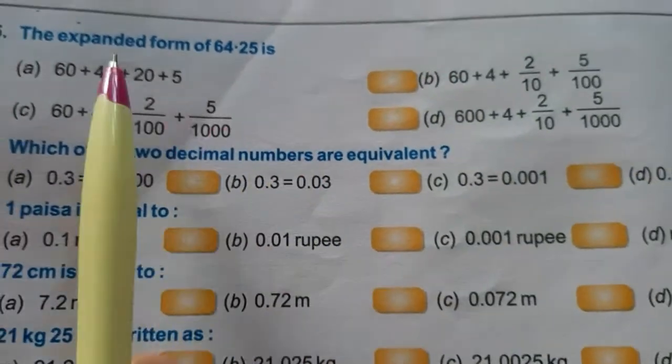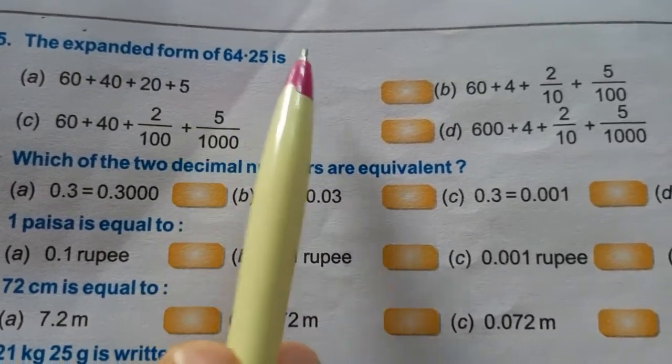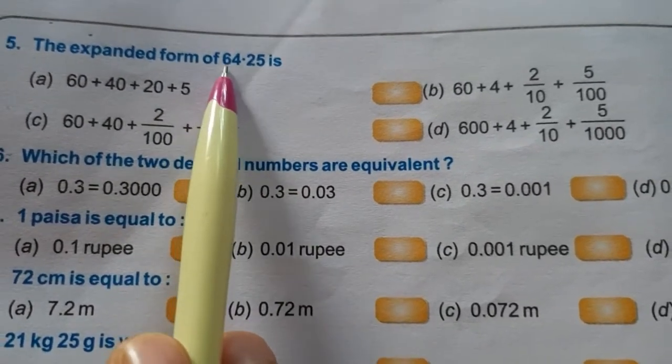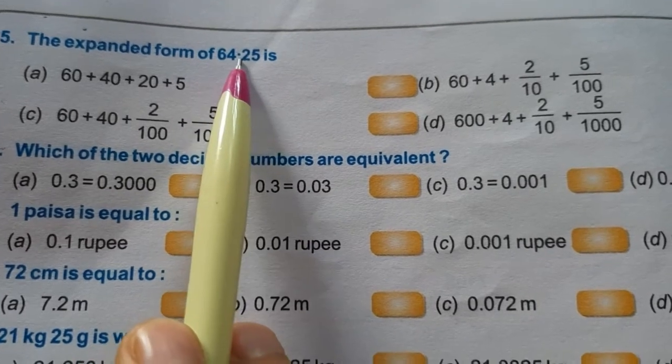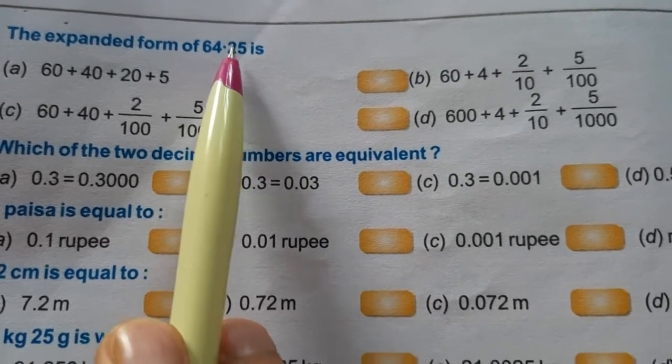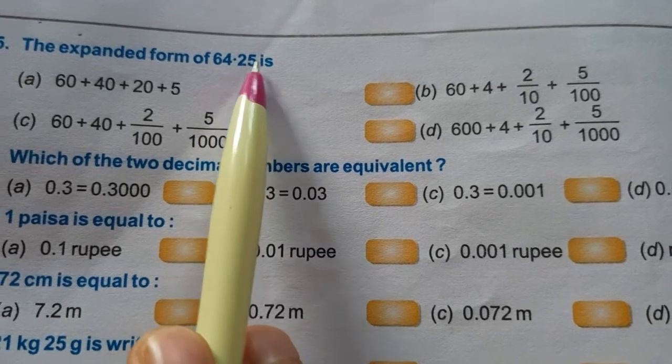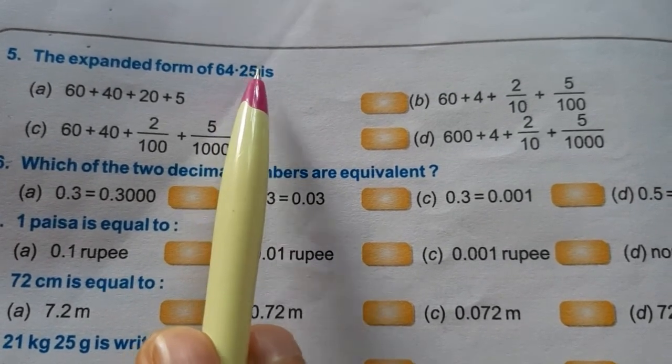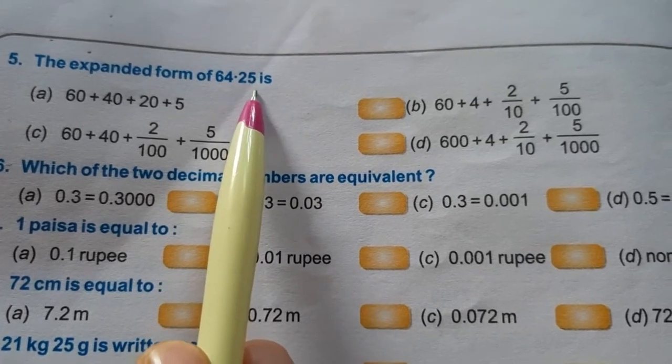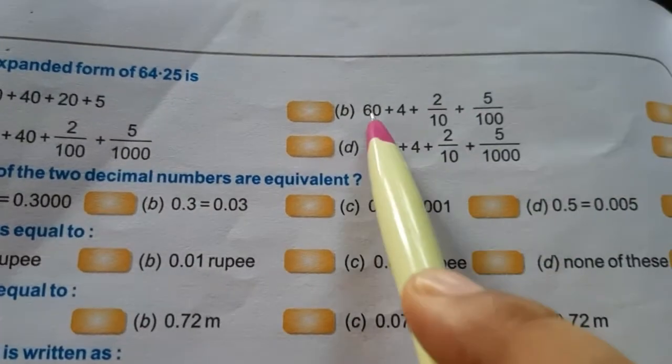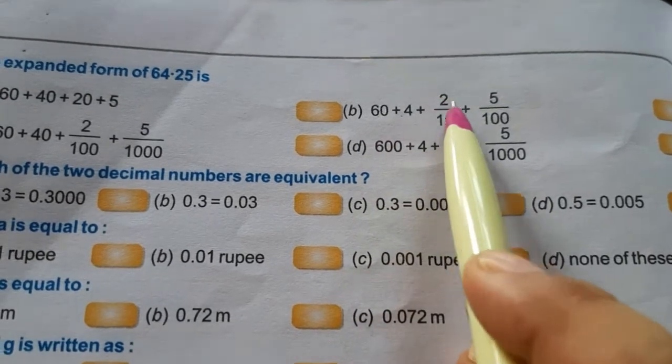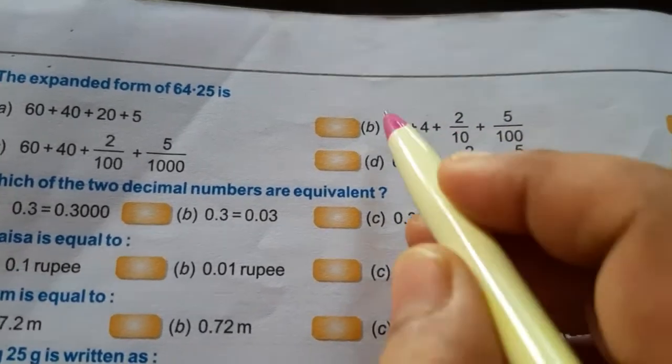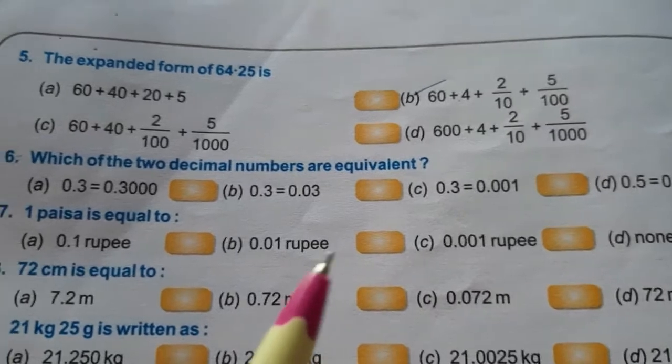Next is the expanded form of 64.25. First is 64 can be written as 60 plus 4. And 0.25 - the 2 is at the tenths place and 5 is at the hundredths place. So it can be written as 60 plus 4 plus 2 by 10 plus 5 by 100. So this option will be our answer.